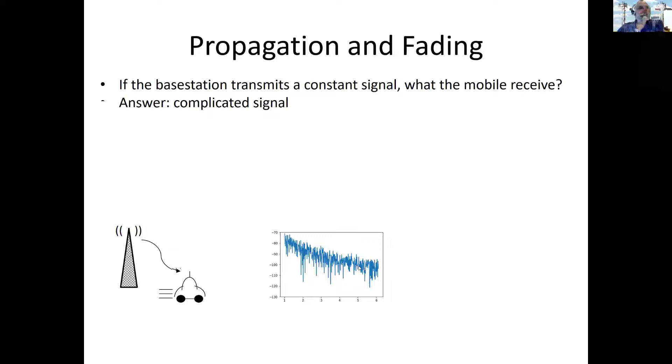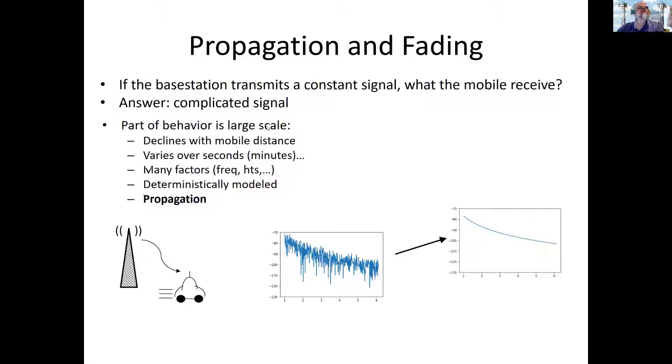You can look at this in different ways. I'm going to take a look at it from the point of view of long-term behavior and short-term behavior. In terms of long-term behavior or large-scale behavior, the mobile is moving away from the base station, at least in my little drawing here. So I expect the long-term signal strength to decline, declining over a distance. This is a process that's going to happen over seconds or minutes as the mobile moves along. Now, many factors are going to figure into this, the frequency of the communications, the height of the base station, height of the mobile, antenna patterns, etc. But the key thing here is this can be deterministically modeled, and that's basically what today's talk is going to be mostly about. And we refer to this as propagation.